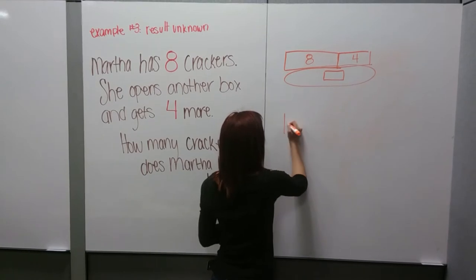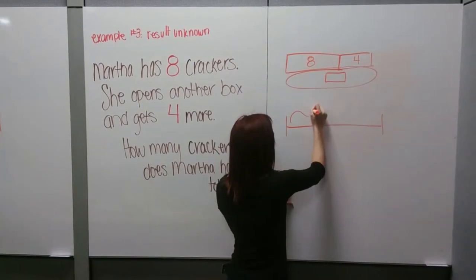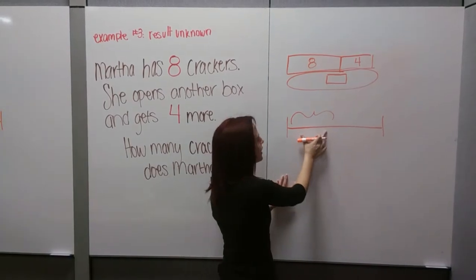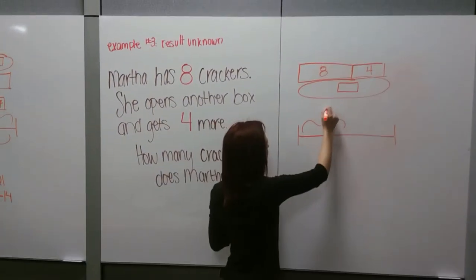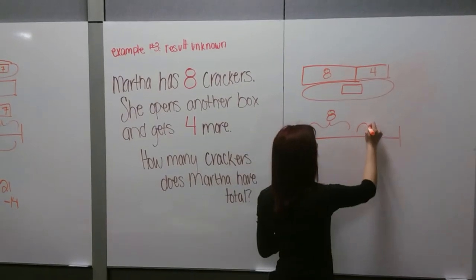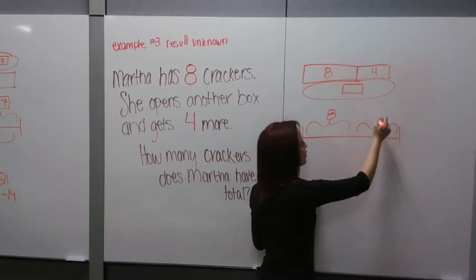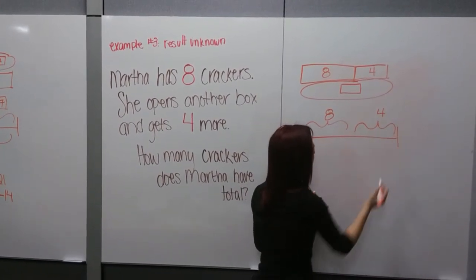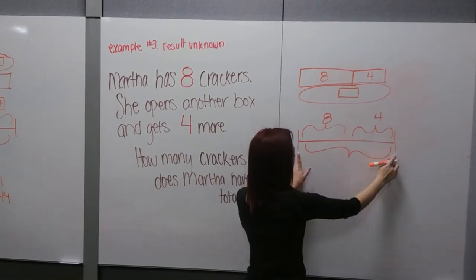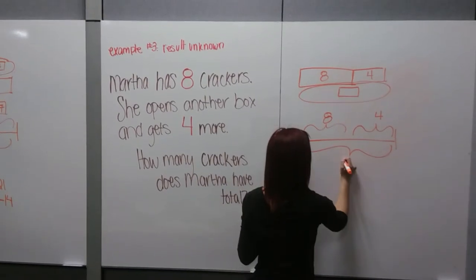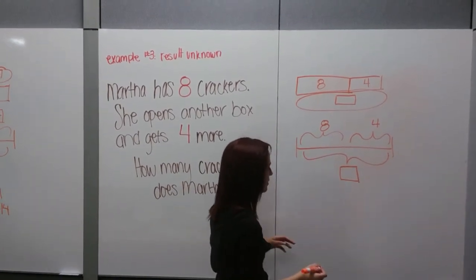For our number line, we draw our number line. Here's our first chunk — that's what she started with, and she started with 8, so we put an 8 here. And then our second chunk is how many more she got, and she got 4 more, so we put a 4. Then down here we put our total for the entire number line, and we don't know how much that is, so we put a box to represent our unknown.